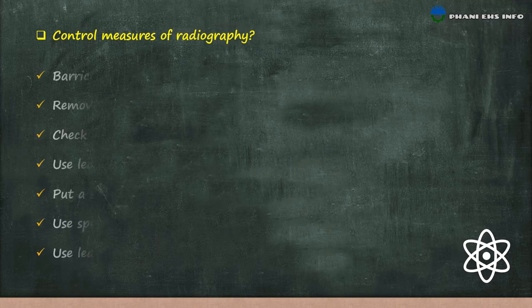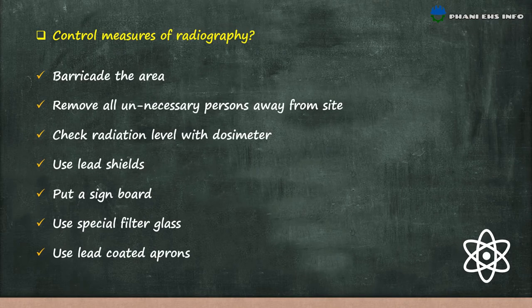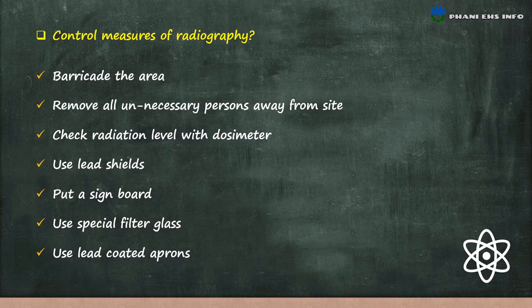Control measures for radiography: barricade the area; remove all unnecessary persons away from the site; check radiation level with a dosimeter; use lead sheets; put a signboard; use special filter glass; and use lead-coated aprons.